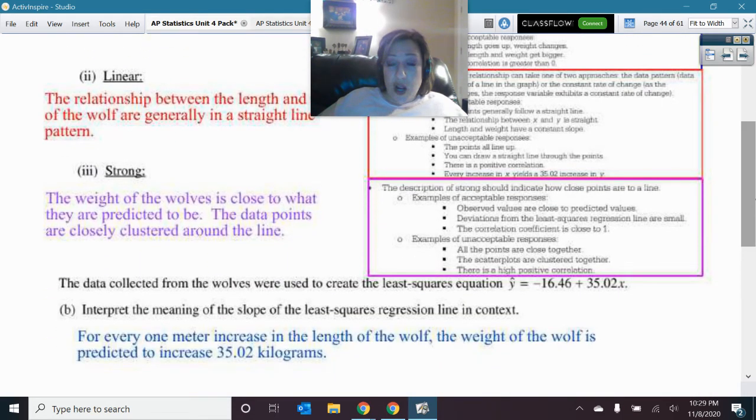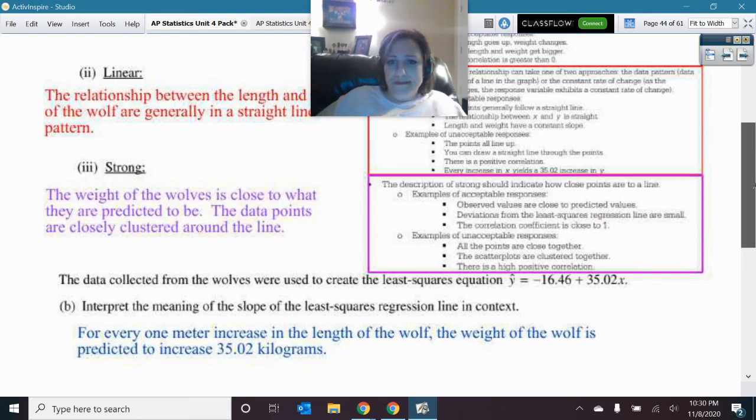Unacceptable is this. The points all line up. That's not okay. You can draw a straight line through the points. That was also not okay. There's a positive correlation. That's not what necessarily makes it linear. And then, every increase in X yields a third. So, that's not correct either. All right. Strong. What is this strong meaning? That the weight of the wolves is very closely correlated. It's very close to what they are predicted to be. What actually happened was close to what was predicted. Here's the examples of acceptable responses. Observed values are close to predicted. Deviations from the LSRL is small. The correlation is close to 1. They let that be that way. Unacceptable. All the points are close together. All the points close together? No. But, they're closely clustered around the line? Yes. Okay.